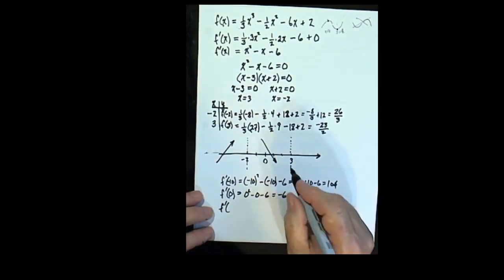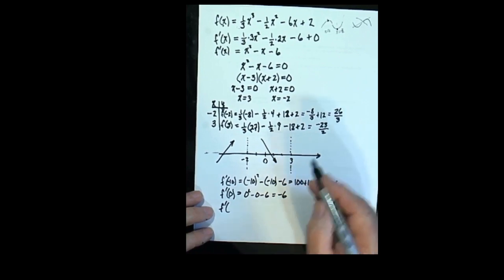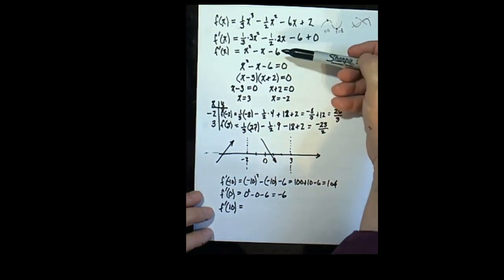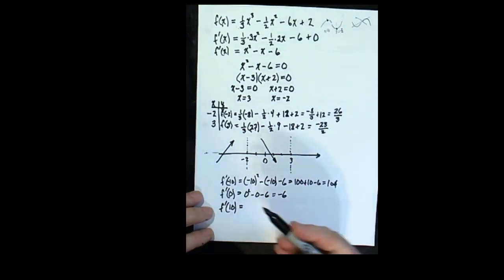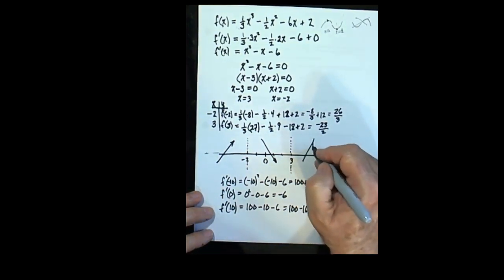Then, worry about after 3. It will have to be going up all the time, or going down all the time, after it passes the x value of 3. So, try a convenient point. 10 is over there, and 10 is easy to calculate with. So, f prime at 10 would be 100 minus 10 minus 6, which will be 100 minus 16, which I believe, if I've got that right, is going to be positive 84. So, it goes up, it comes down, it goes up.